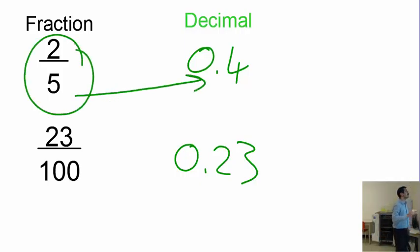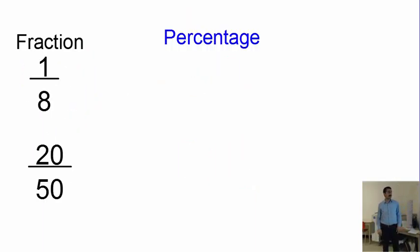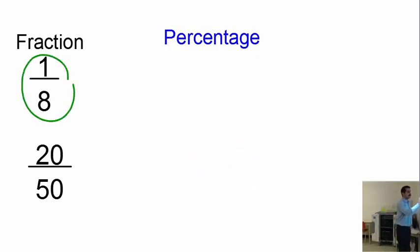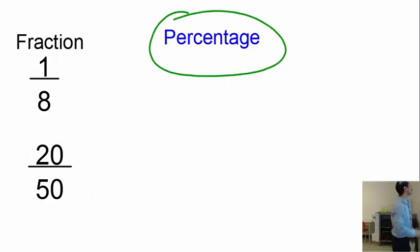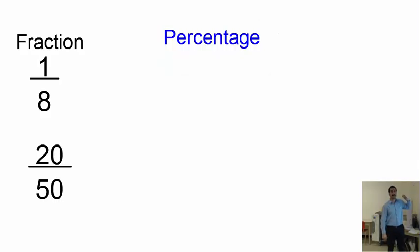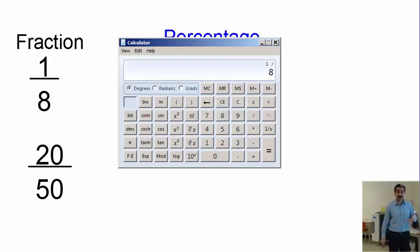Next, we have two fractions and we need to turn them into percentages. The first thing you need to do is make it a decimal — you know how to do it. Bring your calculator and do one divided by eight. That gives you 0.125.